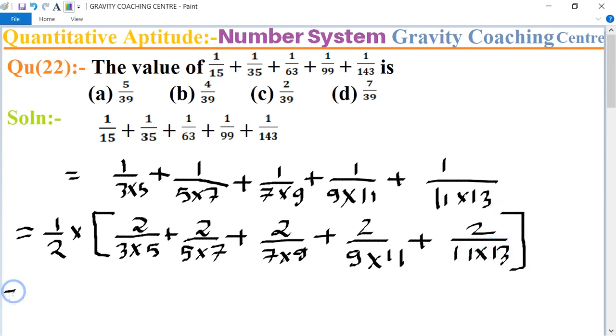And equal to 1 upon 2. The first one becomes 1 upon 3 minus 1 upon 5, and the second one will be 1 upon 5 minus 1 upon 7, and next one...